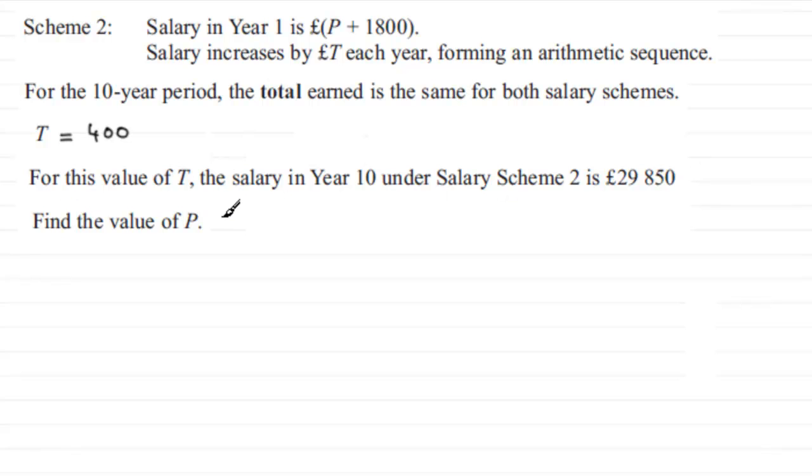Well, under Scheme 2, we know that in the first year the salary was P plus £1,800. So I'll just put that here for a moment: P plus £1,800.